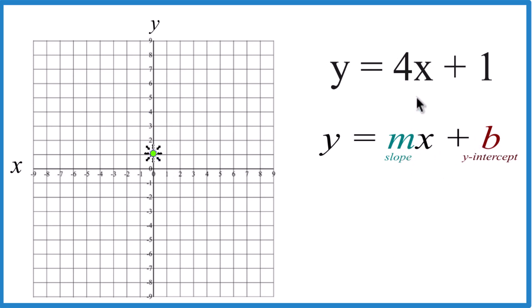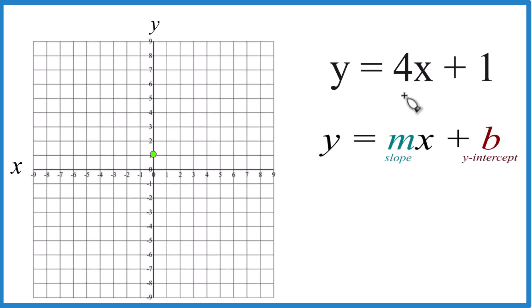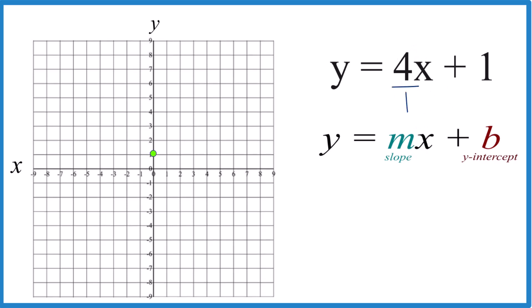For the slope, we have 4. But let's call it 4 over 1, because then we can have rise over run.